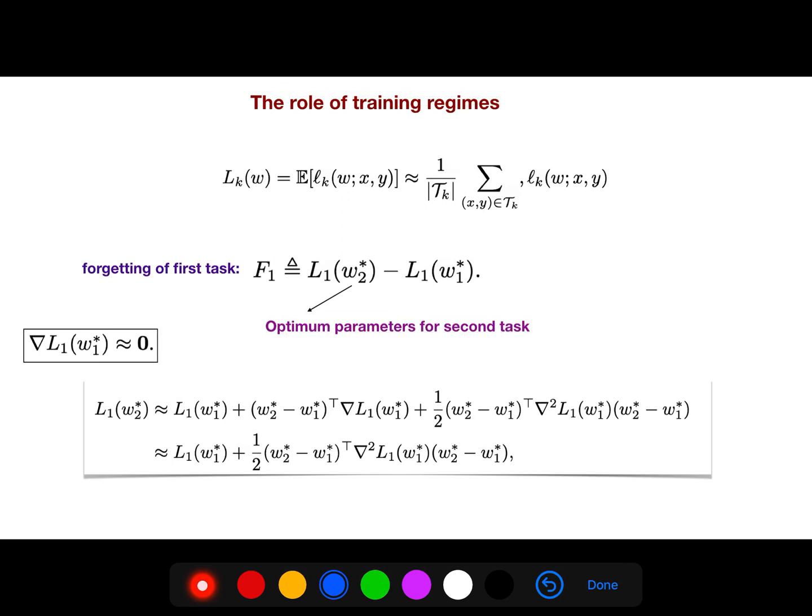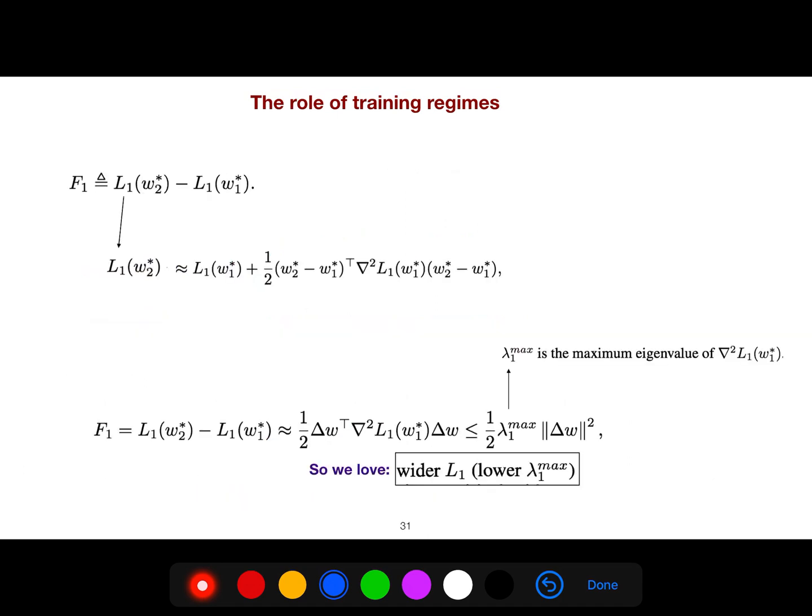And the role of training regime. I love this article by this guy, Mirza, because he actually tried to write how can we measure forgetting. For example, you have learned and W_1 star is just the optimum. But if you give it for the second task, you have a gap. Of course, I have read some articles saying they call it performance gap. So this is equivalent to this measure. I like both of them. Both of them are profound. So when the loss, when the gradient—when you have reached your optimum, this is almost zero. That's why the term goes to zero and remains. So this remains, if you do the Taylor expansion.